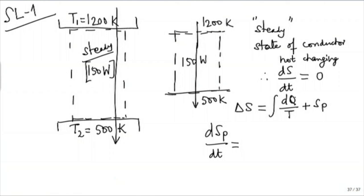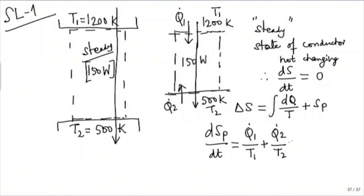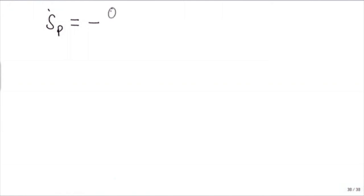Differentiating with respect to time, we get dS_p/dt. This will be the rate of heat absorption divided by the appropriate temperature. The rate at which heat comes in at T1 is Q-dot-1, and at T2 is Q-dot-2. So this will be Q-dot-1 by T1 plus Q-dot-2 by T2 plus S-dot-p. Since we assumed steady state, the entropy change of the system is zero, giving us S-dot-p equal to minus Q-dot-1 by T1 minus Q-dot-2 by T2.